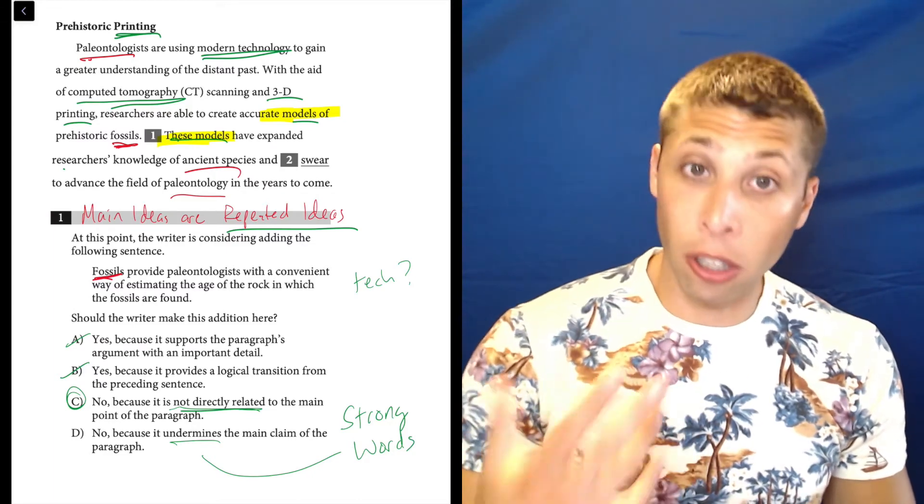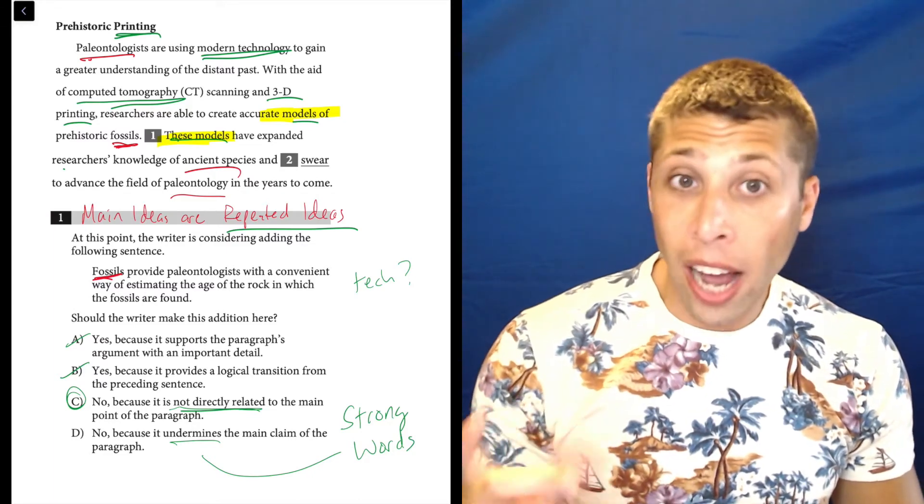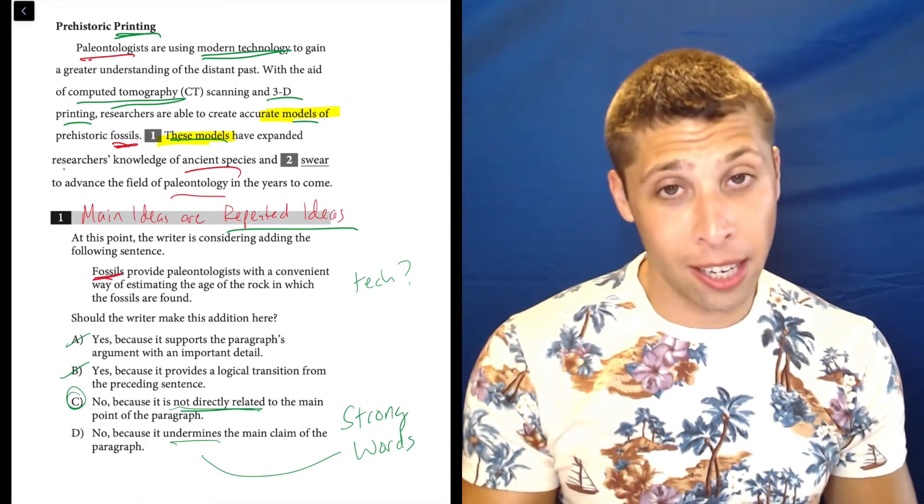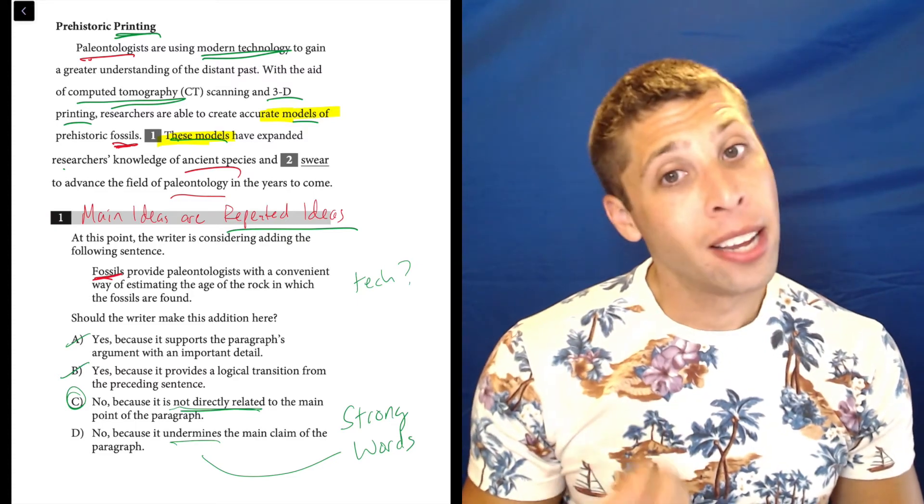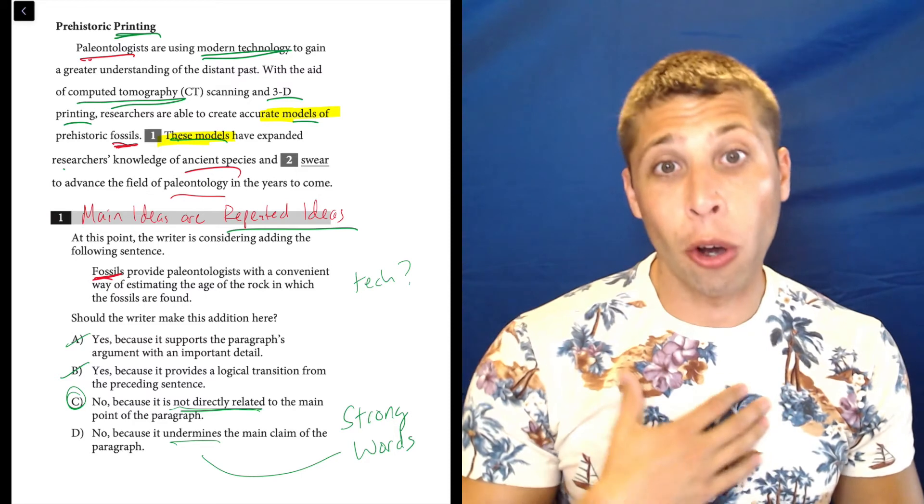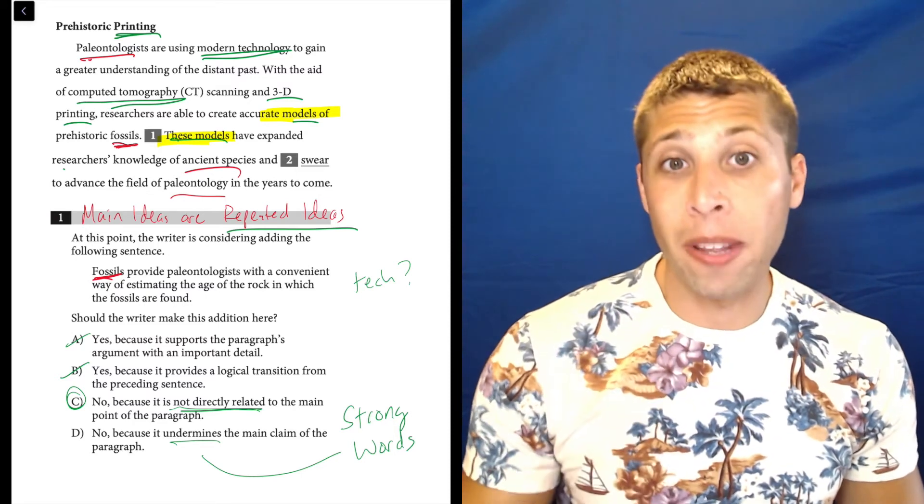And if you're ever unsure and you're deciding between these two kinds of choices and you have to make a choice, the best bet is the weaker answer. So words like undermine, they're not always wrong, but they make me nervous. So if I had to choose, C would have been the better guess anyway.